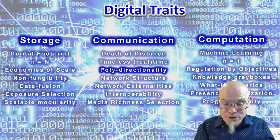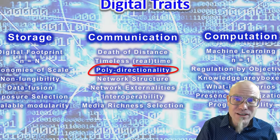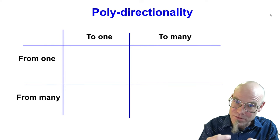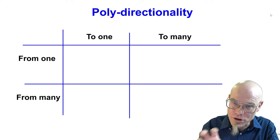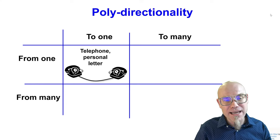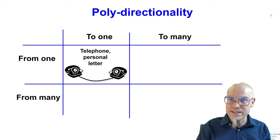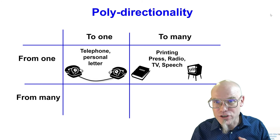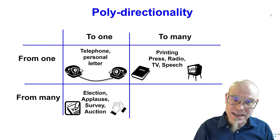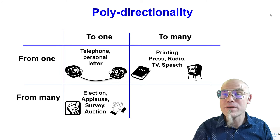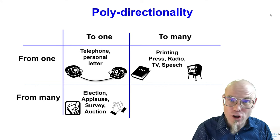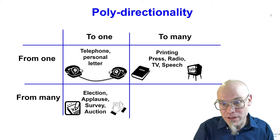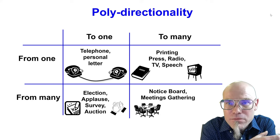The digital effects on space and time can also be seen in the directionality of communication. I use the term 'polydirectional' to describe how digital technology — thanks to convergence on the digital bit — allows you to implement previously separate communication modes on one single platform. Traditionally you would communicate one-to-one on a telephone or in a letter. You could also broadcast one-to-many via radio or television. Many-to-one communication occurs in elections, applause, surveys, or auctions — many people communicating a single message, like who will be the next president.